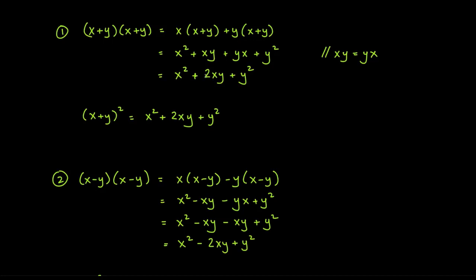A very common misconception is that students write (x + y)² = x² + y², which is wrong. It's missing the middle term 2xy. You cannot distribute the power to the two terms when there's a sum or difference — you can only do that with a product or quotient. That was covered back in the exponent rules section.